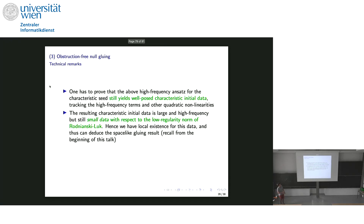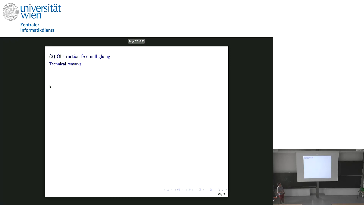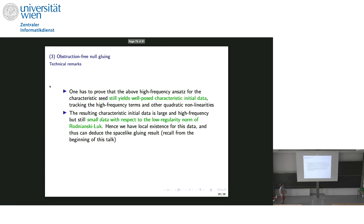There are some other technical remarks: one shows that this ansatz gives well-defined characteristic initial data, and that it is sufficiently regular to apply local existence for the Einstein equations. Once you have constructed this initial data, you develop downwards from the null gluing construction to get a space-like construction. So once you have solved the null gluing problem, you just evolve downwards to get the solution to the space-like gluing problem. And I think that's everything I wanted to say.